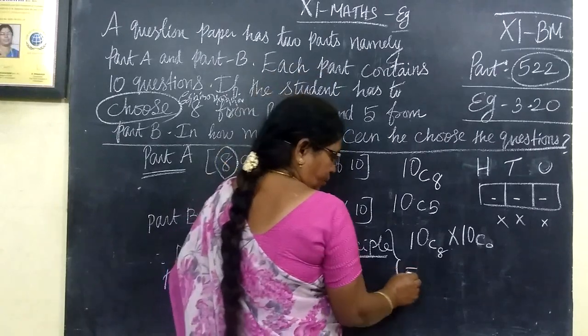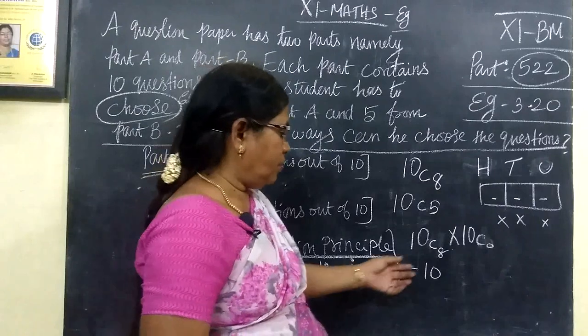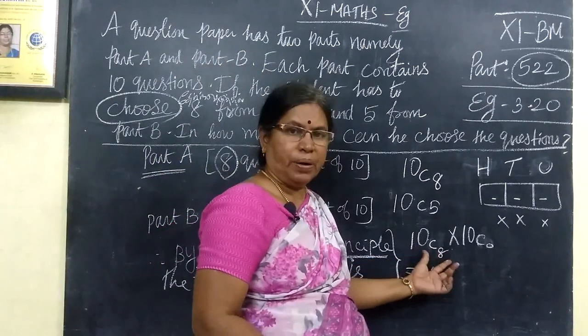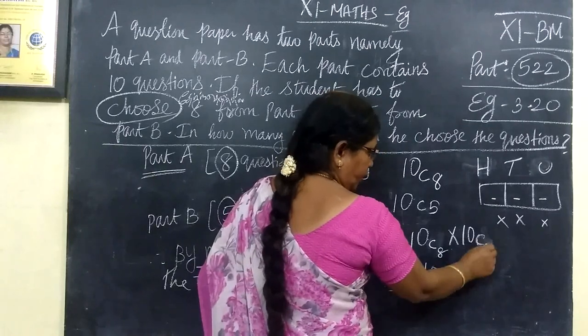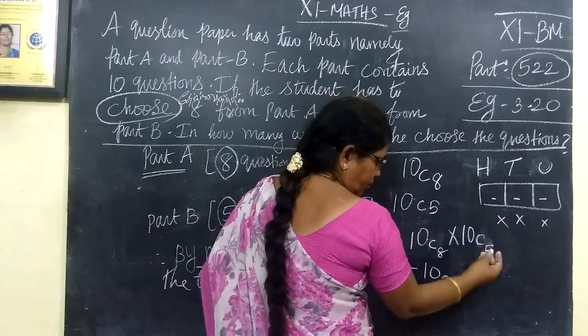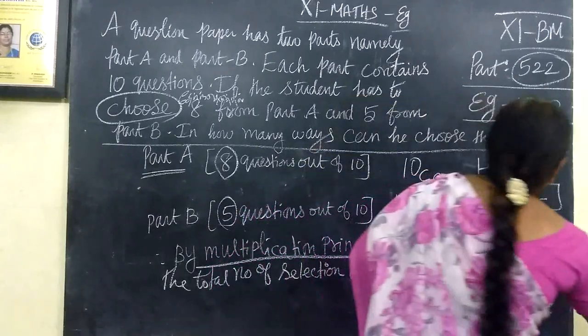What is the answer? 10C8, which is the same as 10C2, times 10C5. This is the answer.